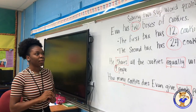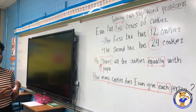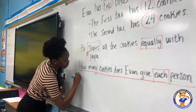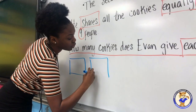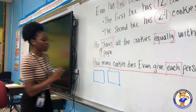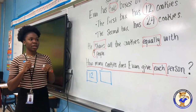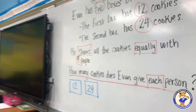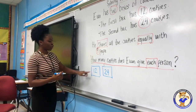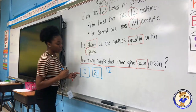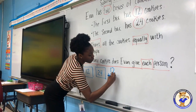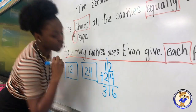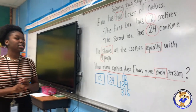Now we're going to evaluate our problem. We are simply going to look at what the problem is asking us and then go ahead and model. So Evan has two boxes of cookies — we are going to draw two boxes. The first box has 12 cookies and the second box has 24 cookies. So now we need to ask ourselves, how many cookies does Evan have in all? We know that he has 12 plus 24. Two plus four is six, one plus two is three. We now know that Evan has 36 cookies in all.